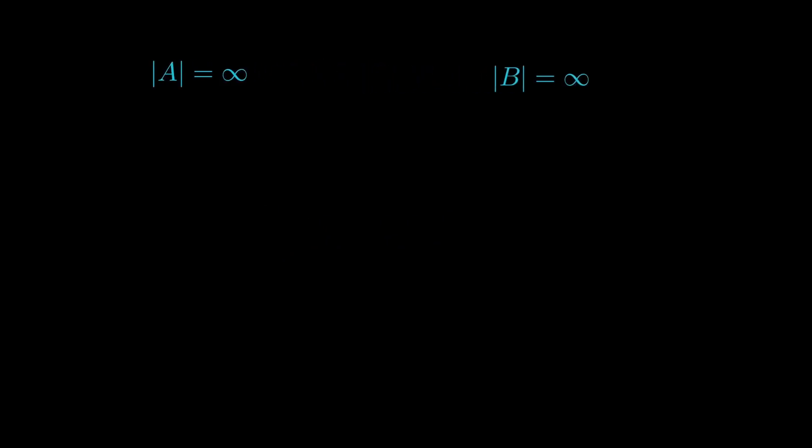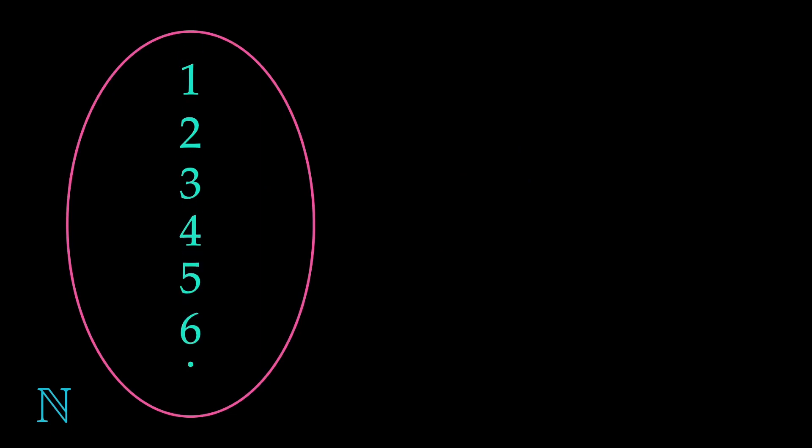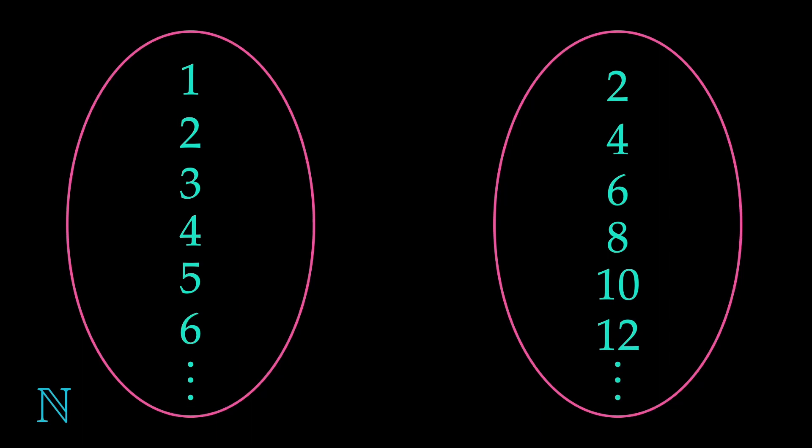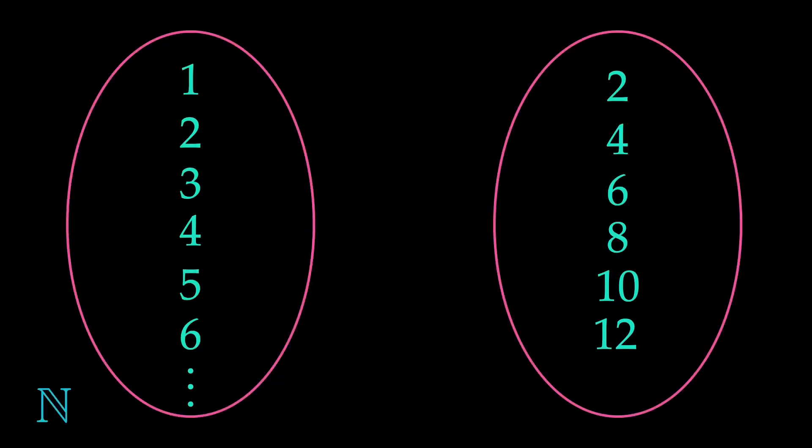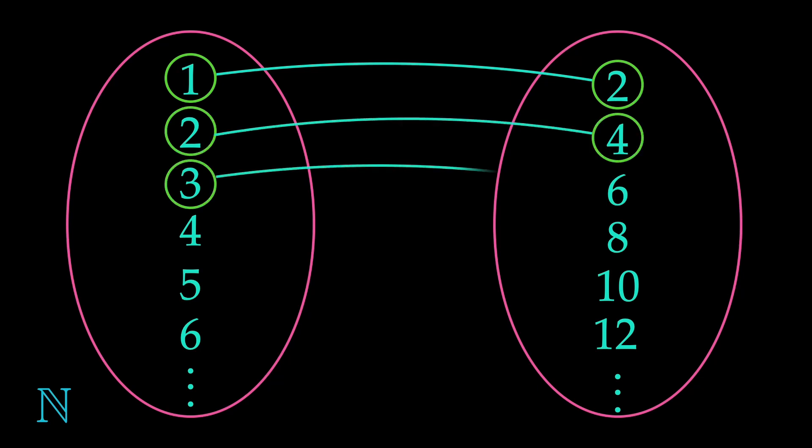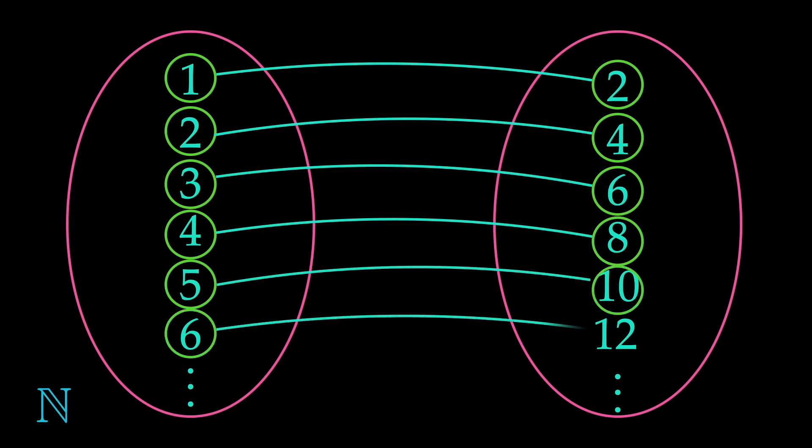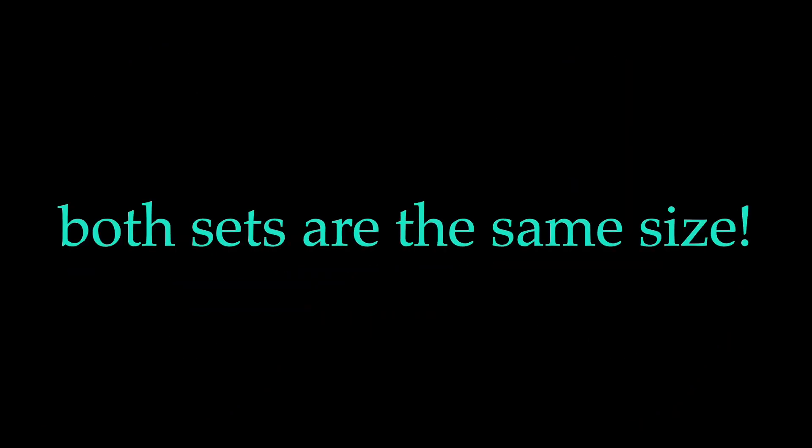Two infinite sets are said to be of the same size if there exists a bijection between them. This already has some incredible consequences. Take the set of natural numbers, for instance. Now take the set of even numbers on the right. Both sets are infinitely big. Intuitively, one would assume there are more natural numbers than even numbers, right? But here comes the twist. If we map every natural number onto its double, we create a bijection between the two sets. Each number on the left has exactly one partner on the right and vice versa. This can only mean both sets are the same size.